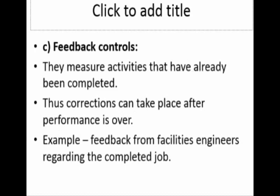The third type of control is feedback control. The first point says they measure activities that have already been completed. The stage at which we perform feedback control is at the output, based upon the measurement of the results of an action. Corrections can take place after the performance is over. In feedback control, we get corrections or assessments only based upon the results that we obtained.